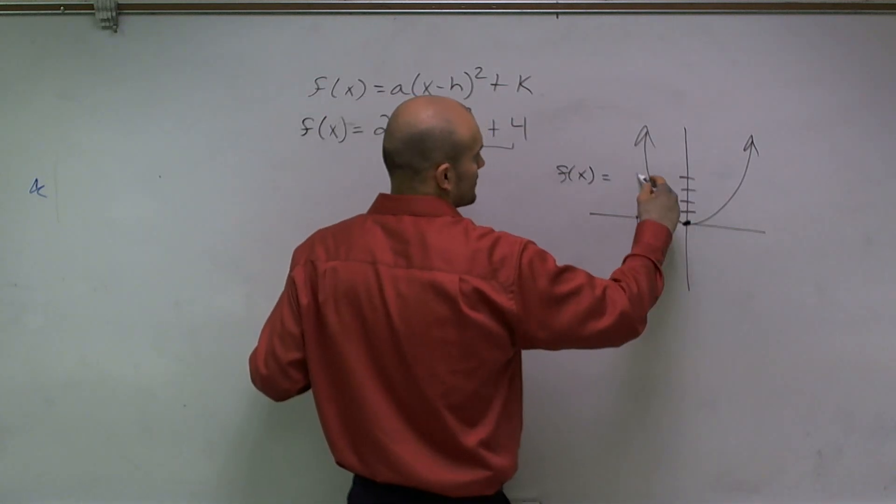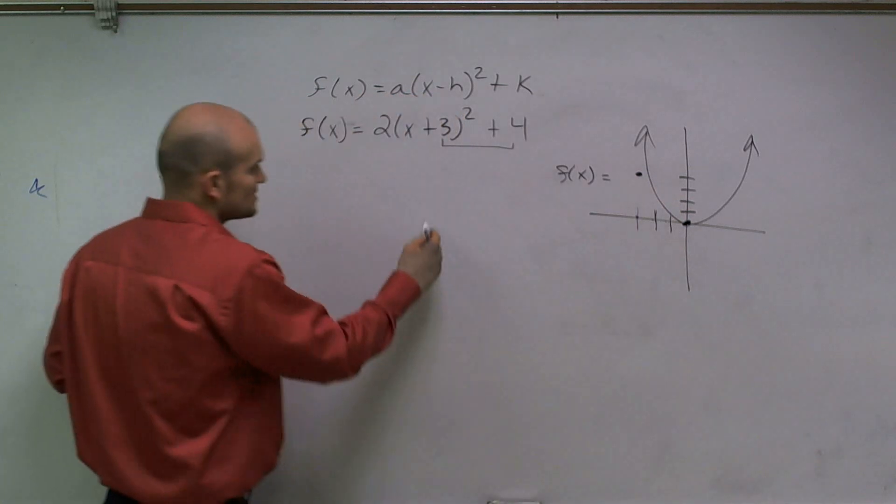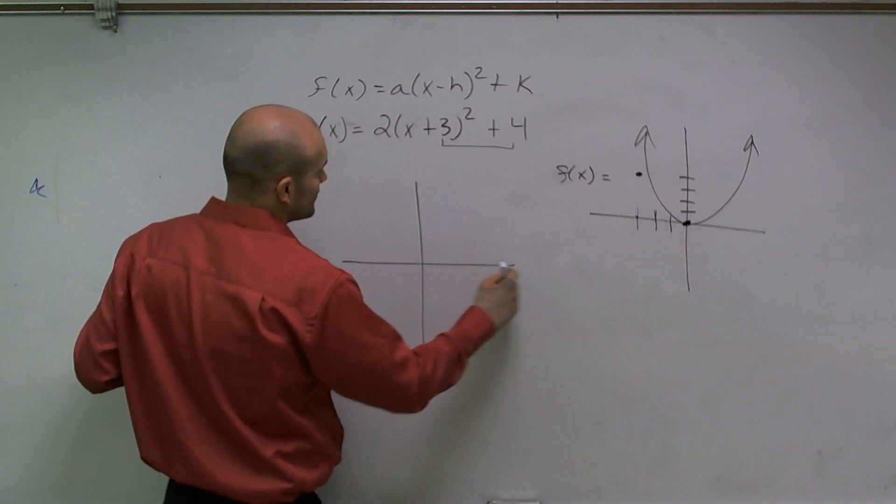One, two, three, four. So my new graph's vertex is now going to be at negative 3, 4.